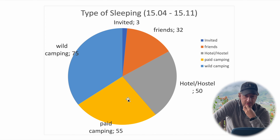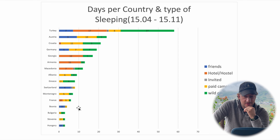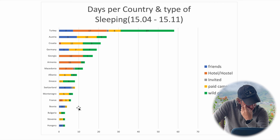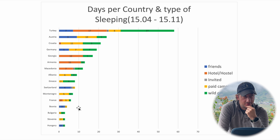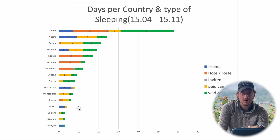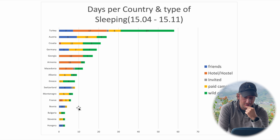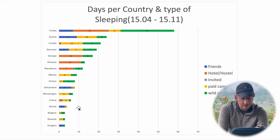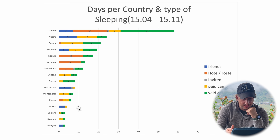The biggest sleeping category for me is wild camping, followed by hotels, hostels, and campgrounds. The type of sleeping changed per country. In Austria I had very little wild camping and unfortunately quite expensive paid camping — in Tyrol there's not much flat space and they find you quite a lot, so I didn't wild camp there much. Further east in Georgia, Armenia, and Macedonia, when it got cheaper, I used hotel and hostel more.